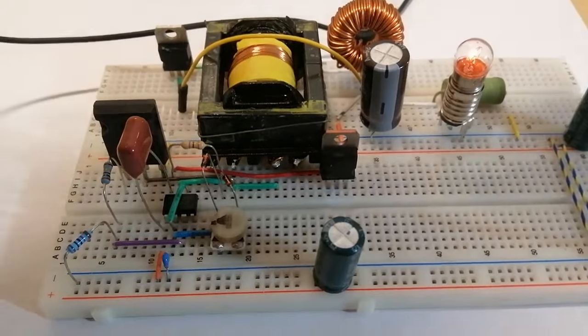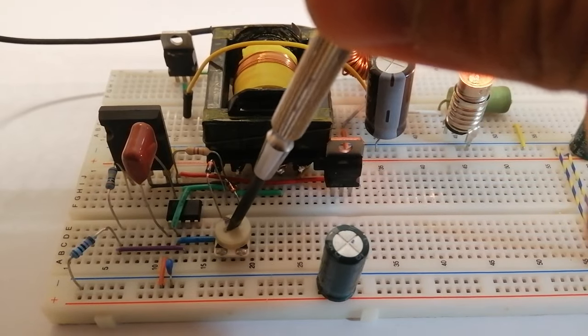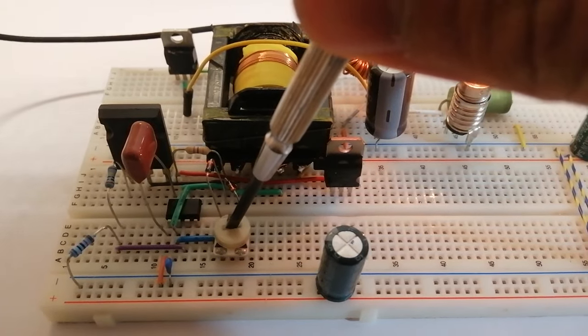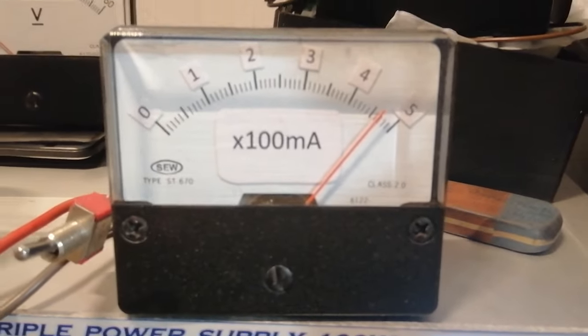So the first thing we notice is that without even getting to 50% duty cycle the current at the input is a lot higher. And the light is also brighter at the output. But let's try to understand why this is happening.